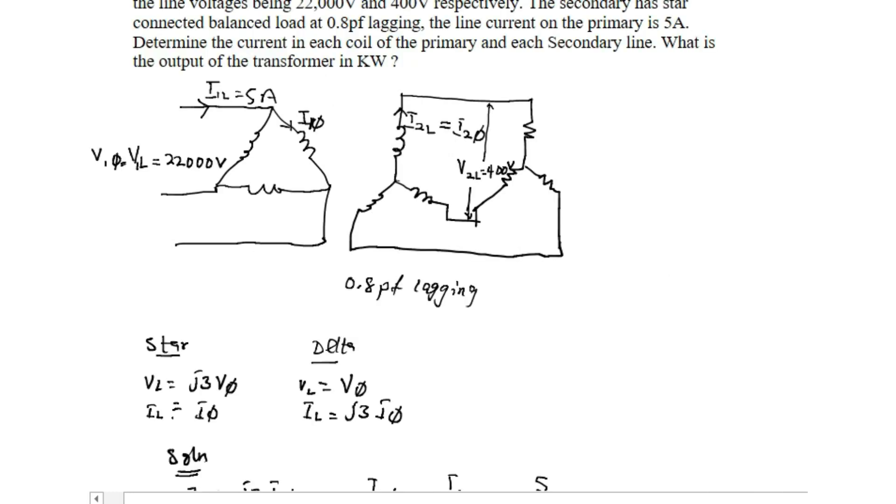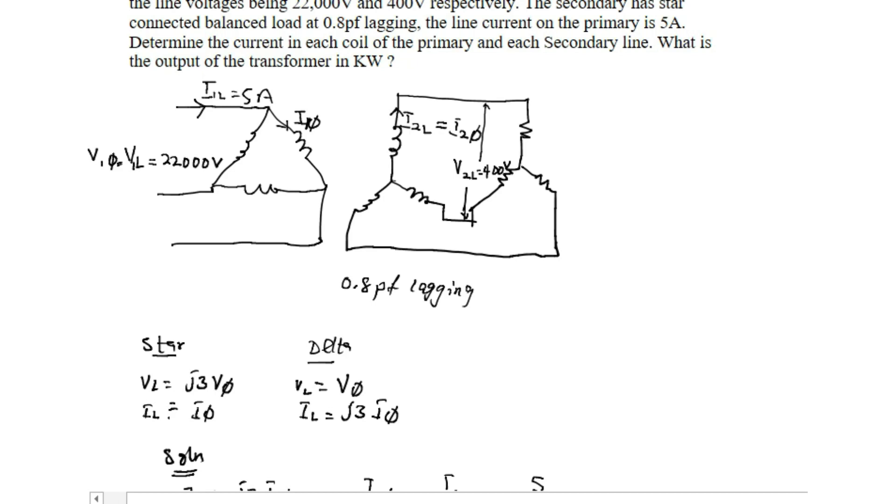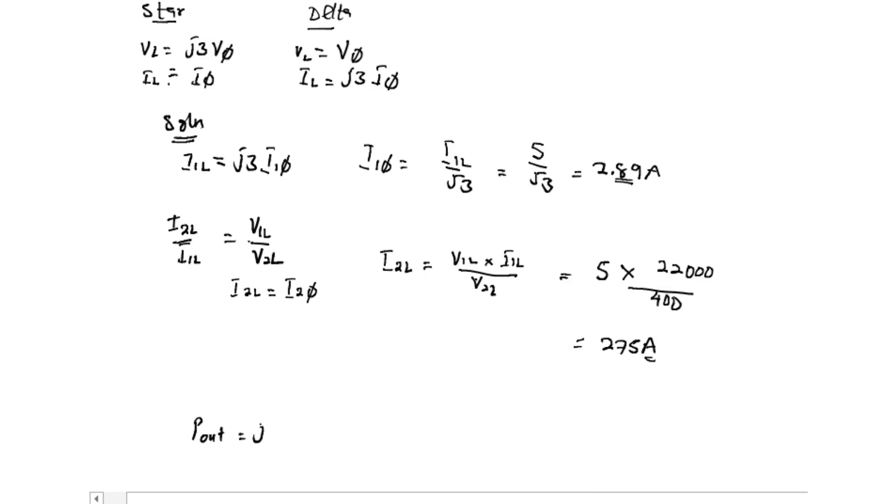We are asked to find the output of the transformer. P out equals √3 times line voltage times line current times power factor. This gives us √3 times 400 times 275 times 0.8. Please let me know what number you get. You can give me feedback in the comment section.